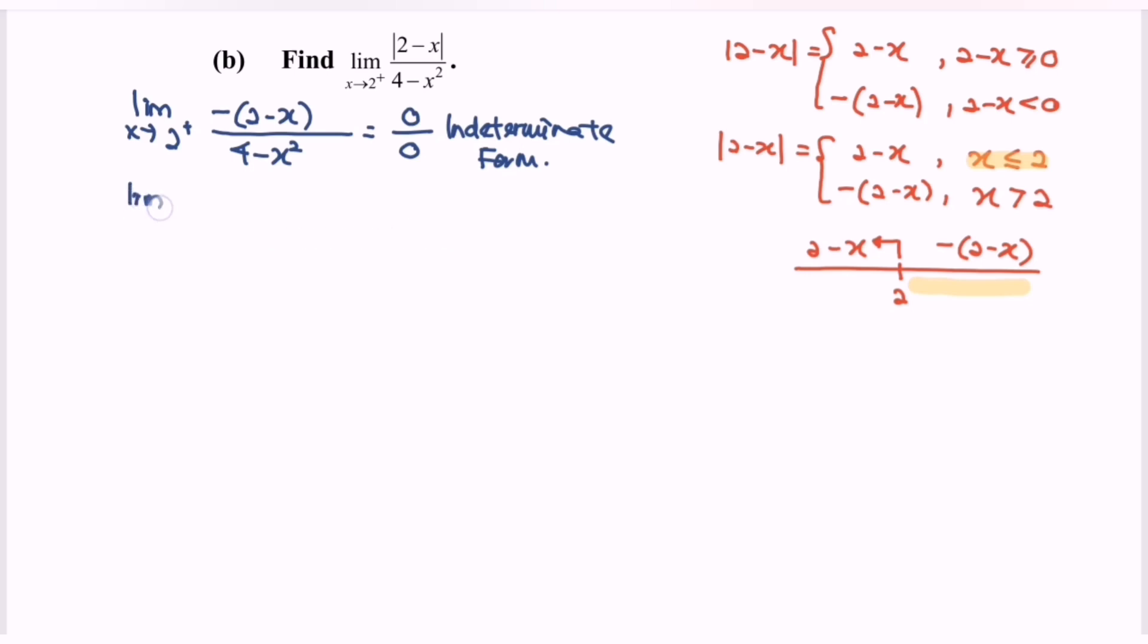Limit when x approaches 2 from the right for the function negative 2 minus x. We need to factor the denominator and we will have 2 minus x multiply with 2 plus x. We notice that we have a common term and we can simplify.